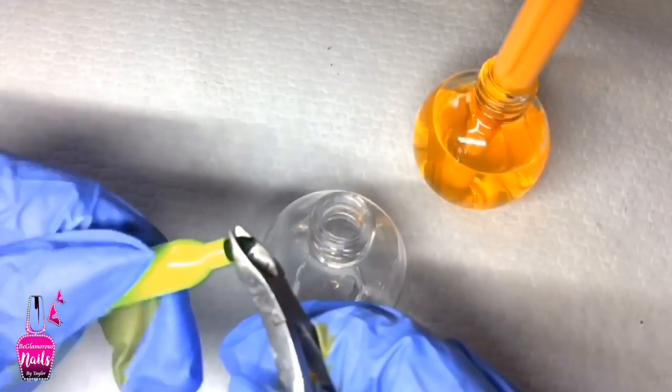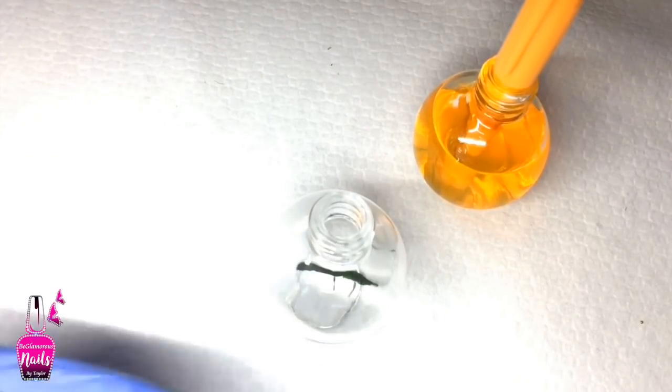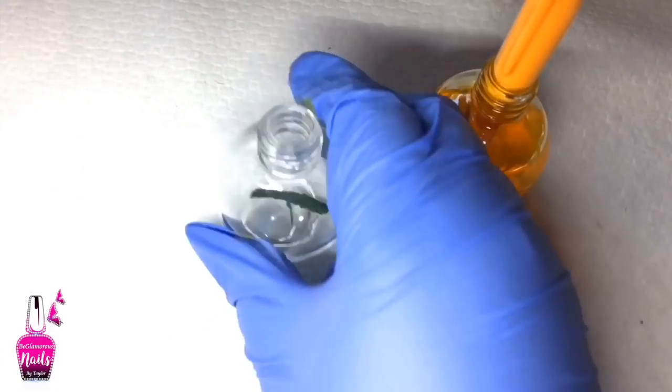So I'm just going to repeat the exact same thing with the green. I inserted the point of it inside of my nail polish bottle and I'm just going to go ahead and take apart the Sharpie.